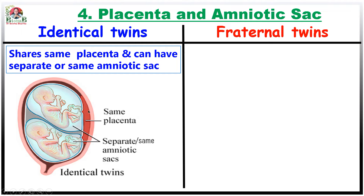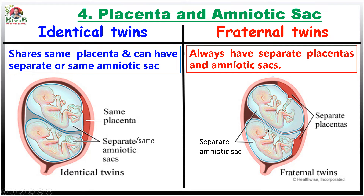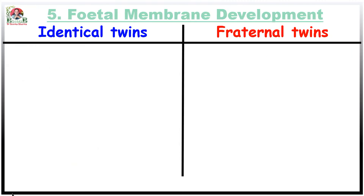As shown in this picture, the maroon-colored structure is the placenta — one placenta shared by two developing fetuses — but they are enveloped in separate amniotic sacs in this case. In contrast, fraternal twins always have separate placentas and separate amniotic sacs, as you can see here with two placentas and two amniotic sacs.